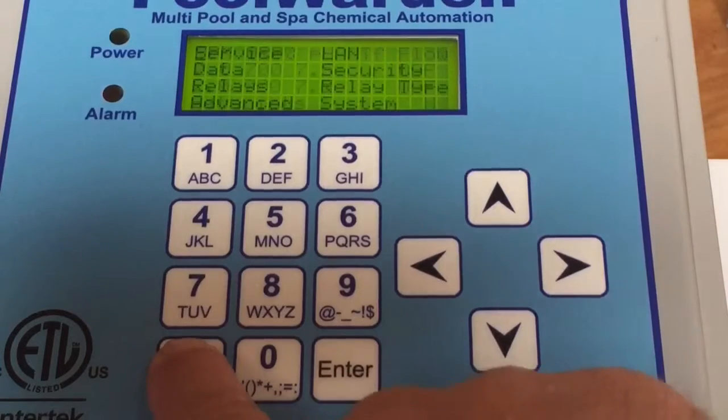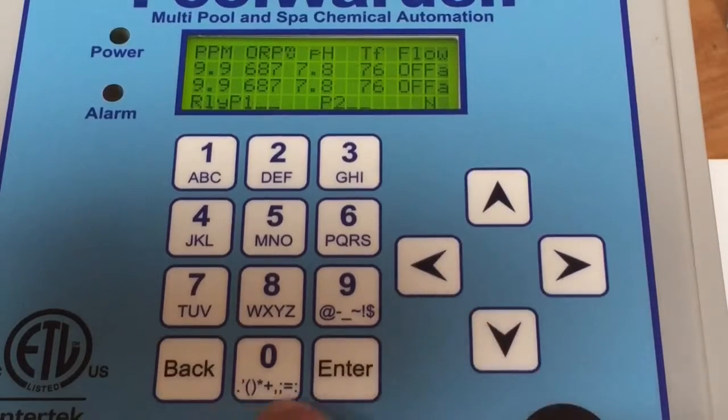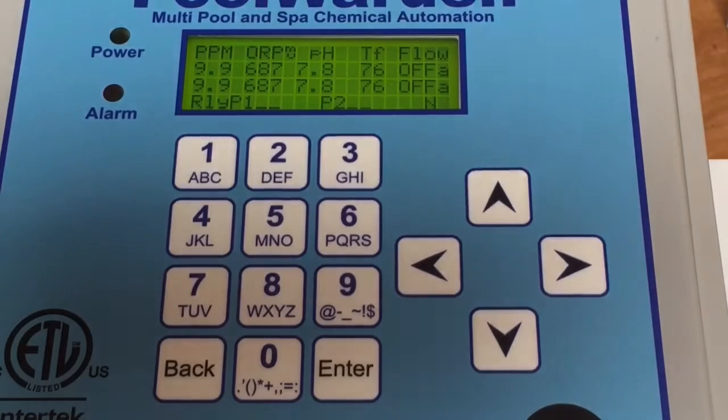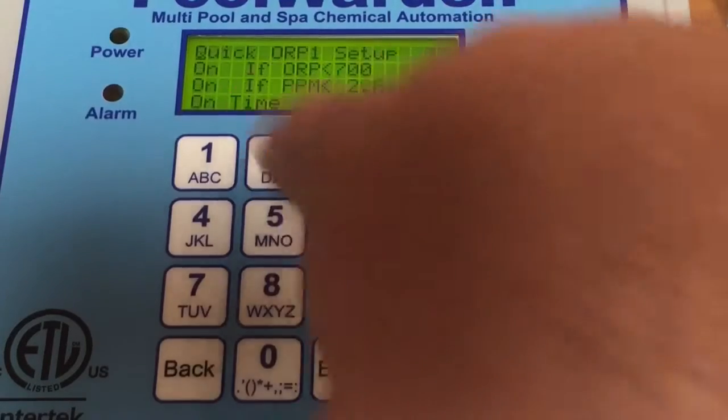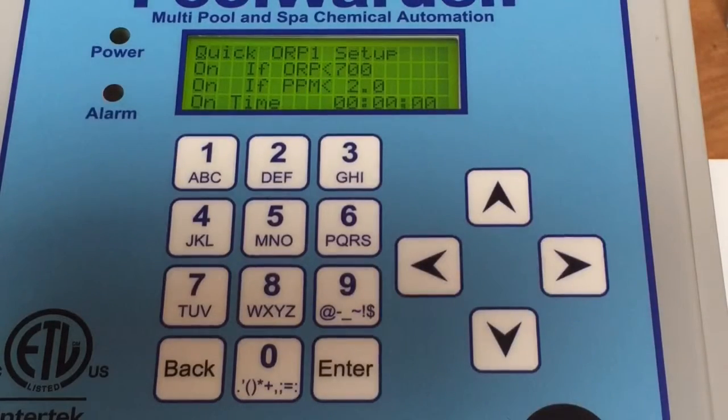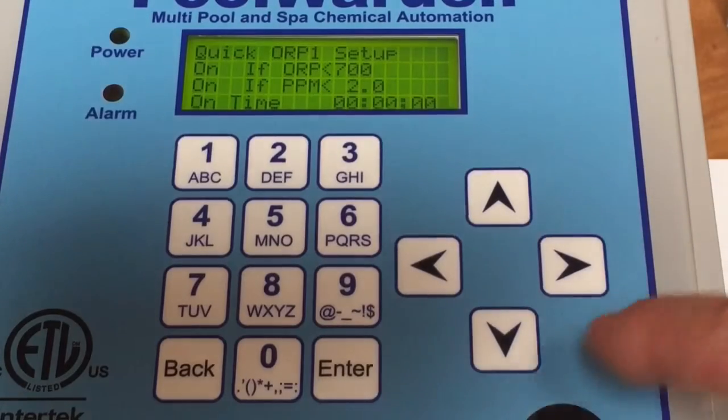Go back to the main screen. Another handy feature here is, once your Pool Warden's set up and you want to just tweak it a little bit, you can press number two and that'll give you a quick setup, which just gives you your very basic measurements or values.